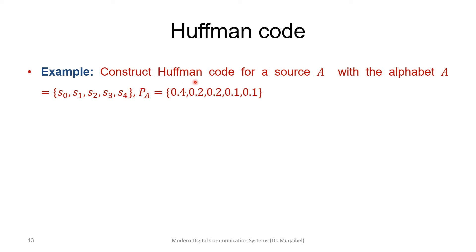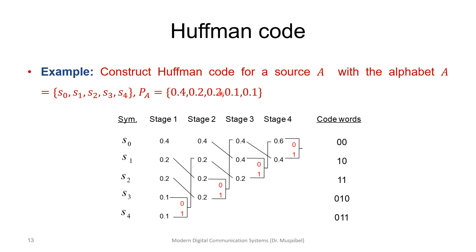Another example: construct the Huffman code for a source with alphabet {s1,...,s5} with probabilities arranged in descending order including ties — for example 0.4, 0.2, 0.2, 0.1, 0.1. When combining the two smallest (0.1 and 0.1 = 0.2), a tie occurs with the existing 0.2. To minimize variance, place the newly summed symbol as high as possible. Continuing consistently, when 0.2+0.2=0.4 ties with 0.4, again move it to the top. This approach reduces variability in codeword lengths across the five symbols.